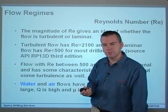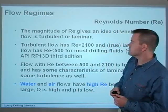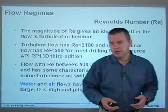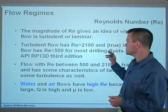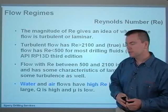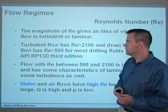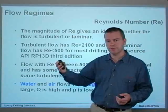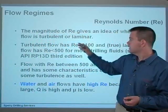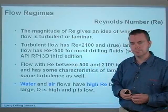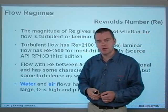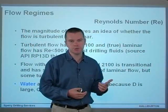The magnitude of the Reynolds number gives an idea of whether the flow is turbulent or laminar. Turbulent flow has a Reynolds number of greater than 2100, and true laminar flow has a Reynolds number of less than 500 for most drilling fluids. That's a generalization, but the source is the API RP13D — the American Petroleum Institute's Recommended Practice number 13D, third edition. Flow with a Reynolds number between 500 and 2100 is transitional, having some characteristics of laminar flow but some turbulence as well.